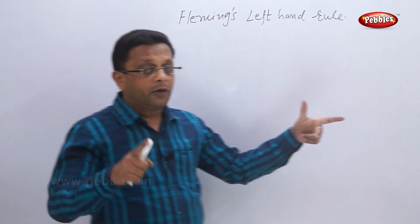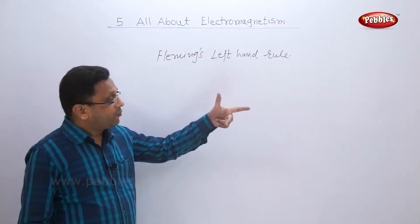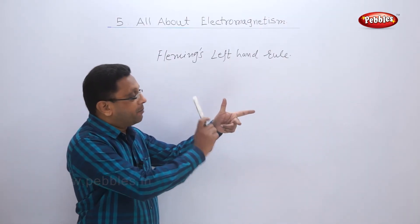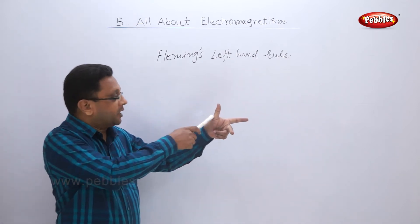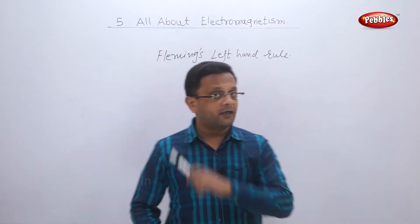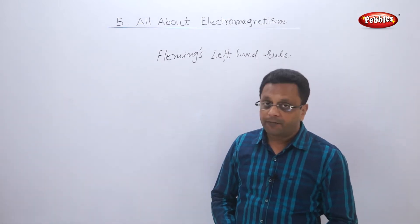The rule states that if my forefinger shows the direction of the magnetic field, my middle finger shows the direction of the current, then my thumb will show the direction of motion of the conductor. This is called the Fleming's left hand rule.